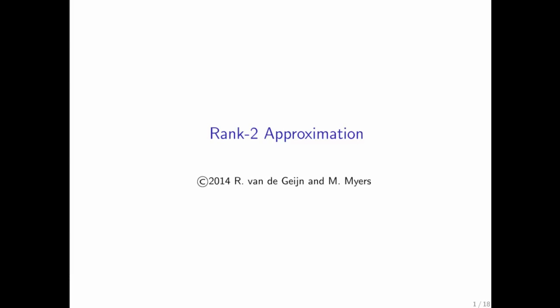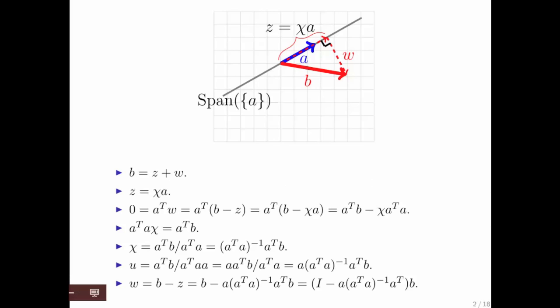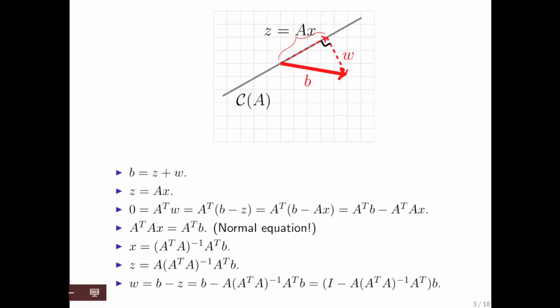Now let's see what happens when we use a rank-2 approximation. What does that mean? Well, we saw how to project onto the span of A. And we went through the math of what it means to project onto the column space of a matrix A.